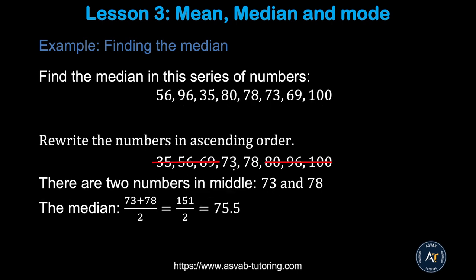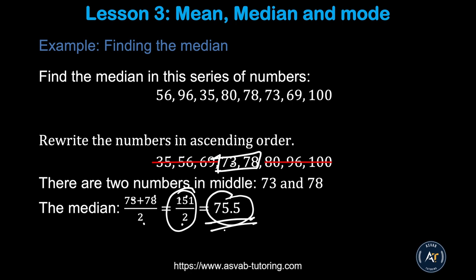However, if you have two middle numbers, what do you do? After arranging in ascending or descending order, if there are two middle numbers, you add them and divide by two. Here, the two middle numbers are 78 and 73, so 78 plus 73 divided by 2 gives you 151 over 2. If you divide that, that gives you 75.5. So that is the median.